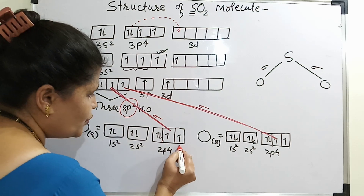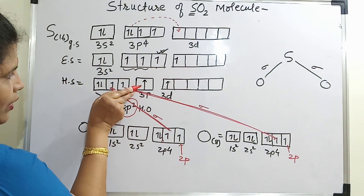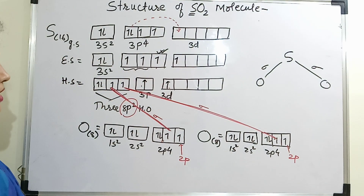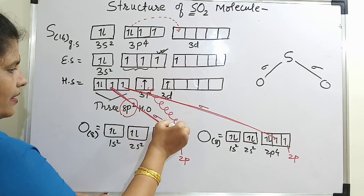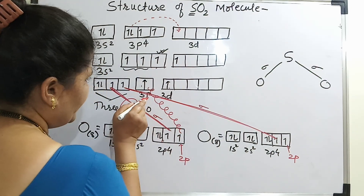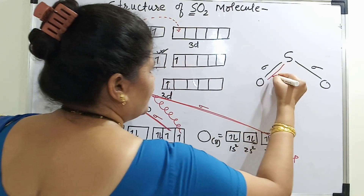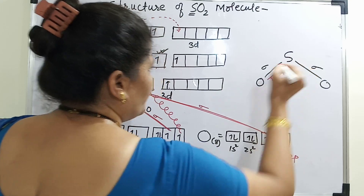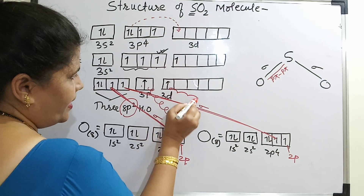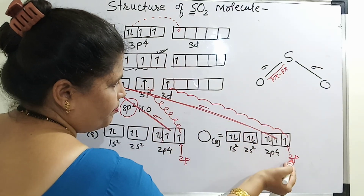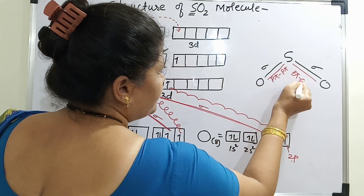What is left is this 2p, and the 2p of the two oxygen atoms and the 3p of sulfur and the 3d of sulfur. The first bond overlap will give a p-pi, p-pi interaction or bond, because it is unhybridized. The 3d will form a bond with this p, so on the other side, the second bond is a p-pi, d-pi bond.